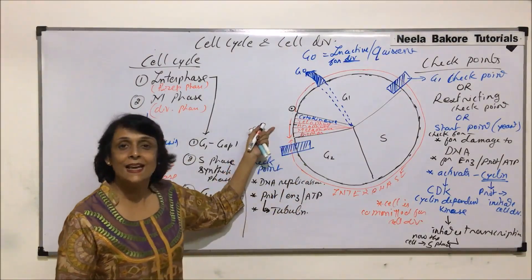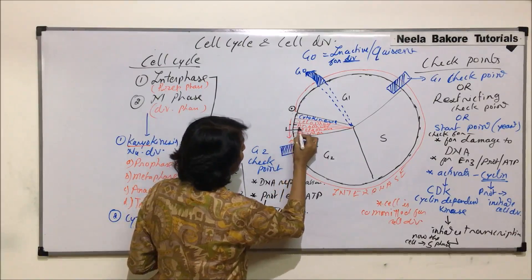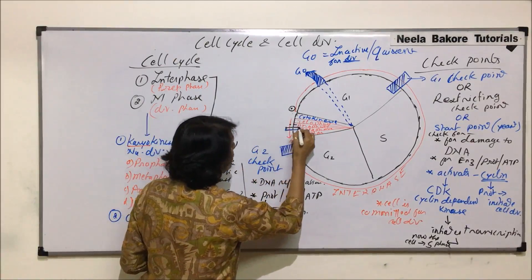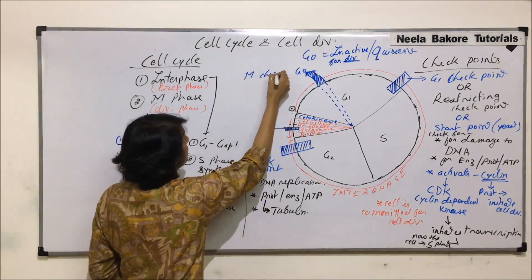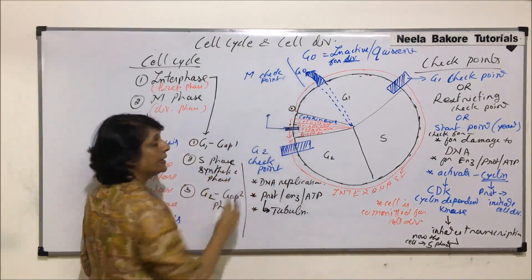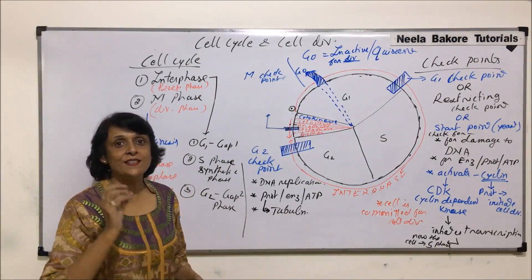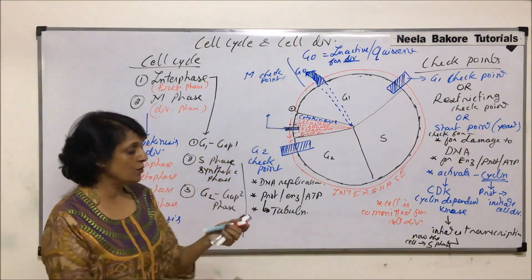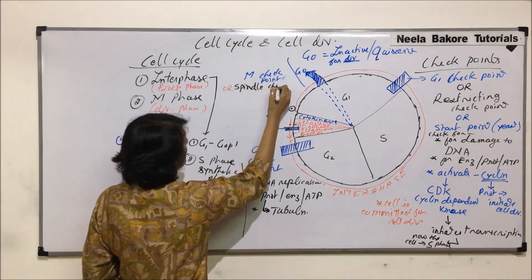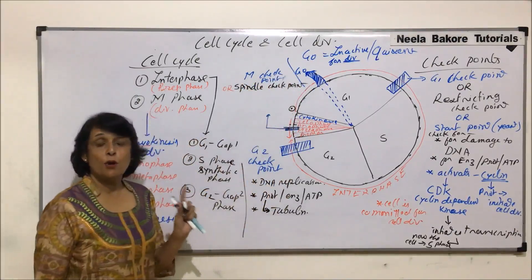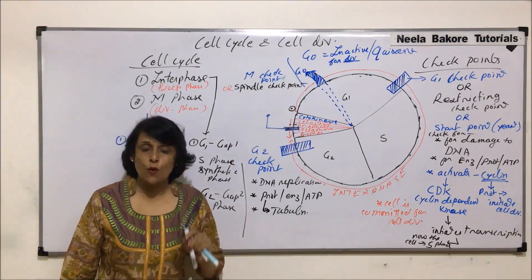If everything is normal, the cell enters M phase, and here again there is one checkpoint. This checkpoint is at the end of metaphase — it is the third checkpoint, known as the M checkpoint. It is also known as the spindle fiber checkpoint, or simply the spindle checkpoint. The most important thing checked here is whether the spindle fibers are properly attached to the kinetochores of the chromosomes or not.